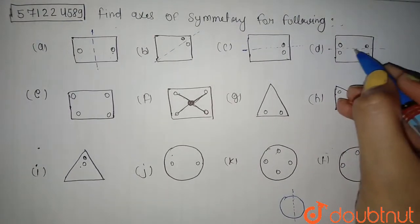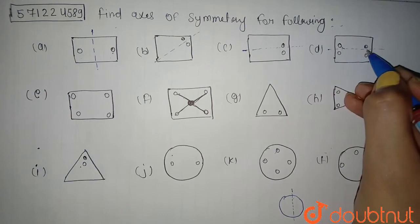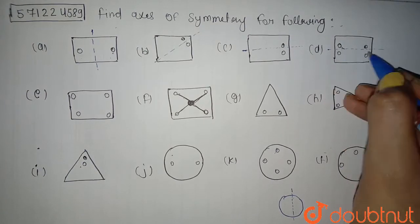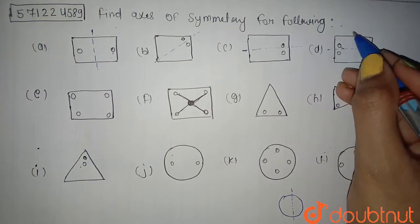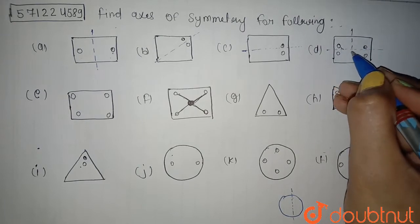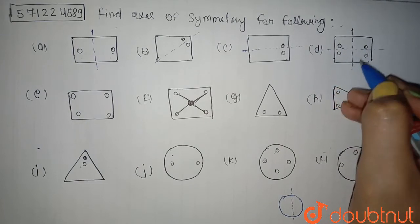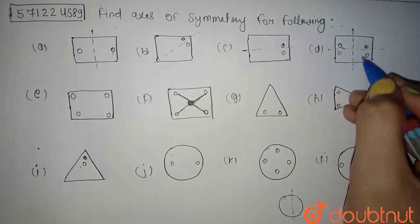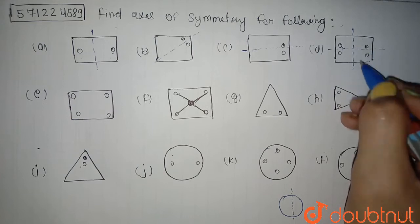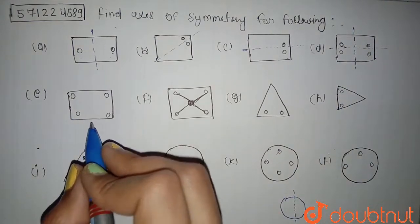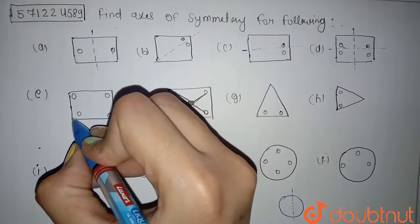Here you can see that this distance and this distance are also equal, so you can also divide it around this axis as well. So this is also an axis of symmetry here.